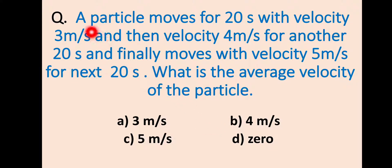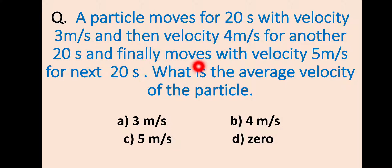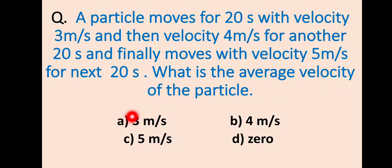اس MCQ میں پوچھ رہا ہے کہ ایک particle ہے، وہ 20 seconds کے لیے 3 meter per second سے move کر رہا ہے، اور اگلے 20 seconds کے لیے 4 meter per second سے، اور finally اگلے 20 seconds میں 5 meter per second سے move کرتا ہے۔ تو اس condition میں اس کی average velocity کیا ہوگی؟ A میں 3, B میں 4, C میں 5, اور D میں 0 ہوگی۔